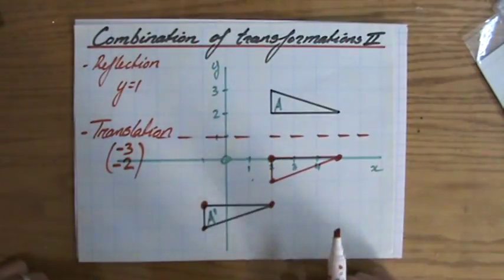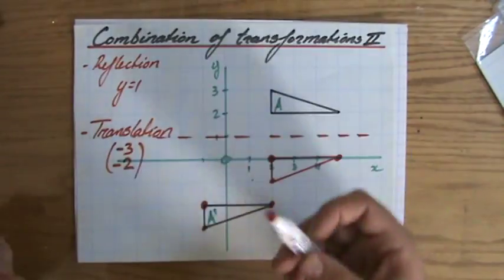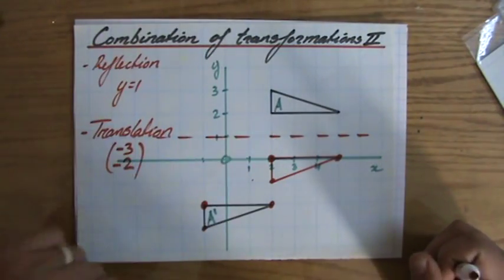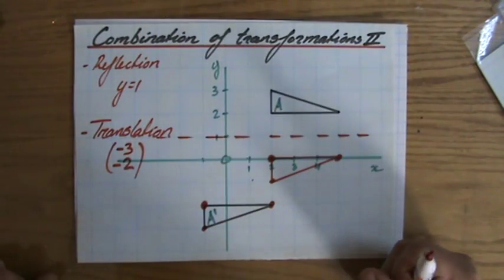Okay, so the combination of transformations, in this case, first a reflection, the mirror line y equals 1, followed by a translation with a column vector of minus 3, minus 2.